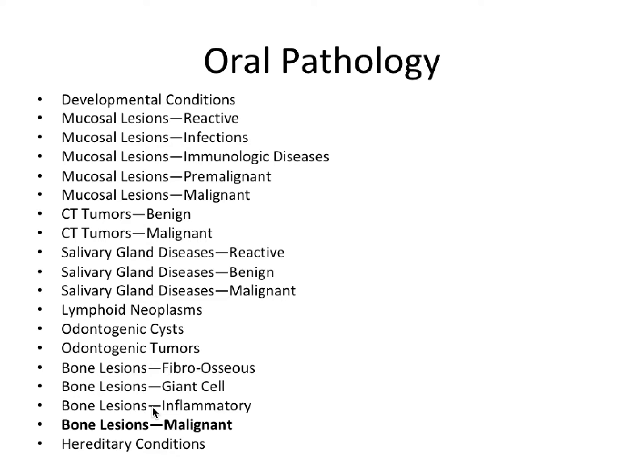Malignancies manifesting in bone include a lot of the things we've already talked about, like sarcomas, lymphomas, and leukemias. We'll also add in metastatic carcinomas. Numb lip or paresthesia is the most frequent presenting symptom and the most frequently tested. So if you see something about numb lip, paresthesia, or dysesthesia, you should immediately think this could be a malignancy that has neoplastically invaded a nerve and caused nerve injury and resulting numbness.